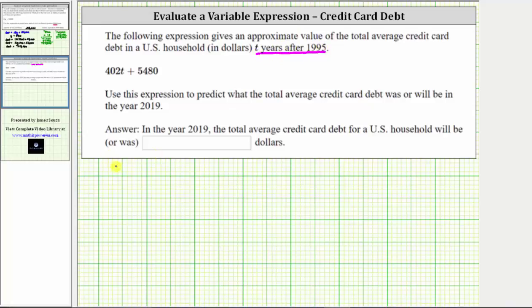Let's make a note below and say the debt equals 402T plus 5,480. Use this expression to predict what the total average credit card debt was or will be in the year 2019. We need to be careful here because we do not substitute 2019 for T in the expression because T is the number of years after 1995.